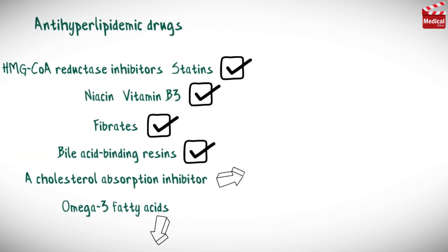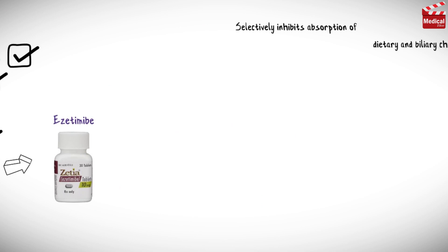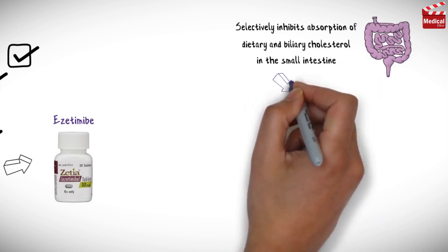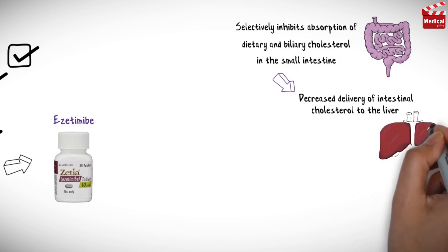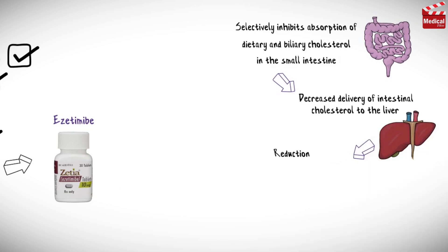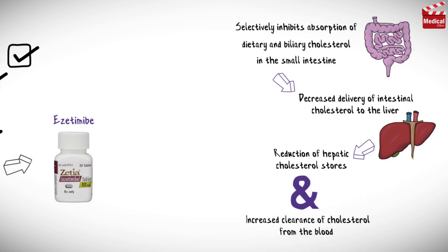The first topic we'll discuss is the cholesterol absorption inhibitor, which is called ezetimibe. It selectively inhibits absorption of dietary and biliary cholesterol in the small intestine, leading to a decreased delivery of intestinal cholesterol to the liver. This leads to a reduction of hepatic cholesterol stores and an increased clearance of cholesterol from the blood.